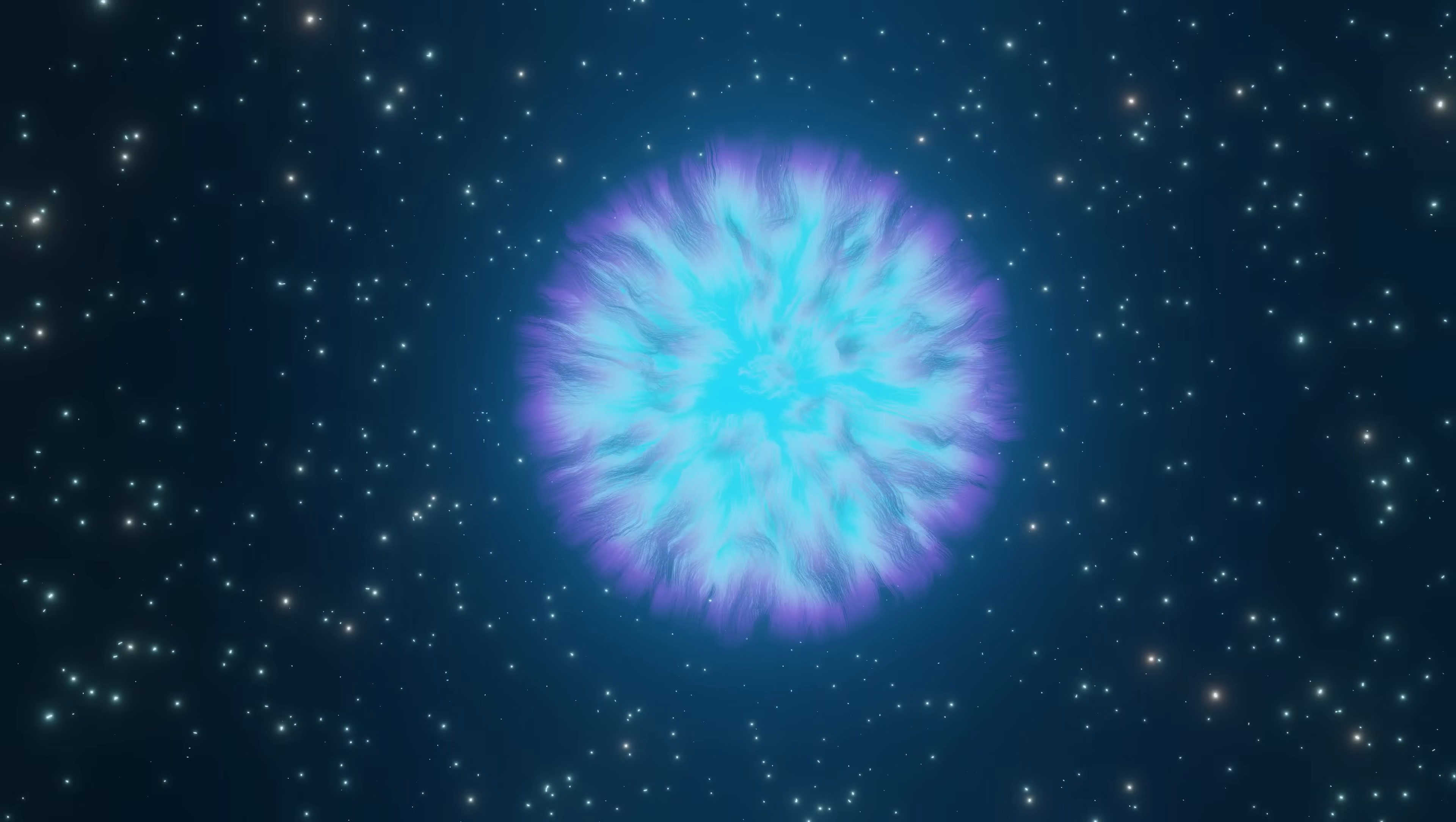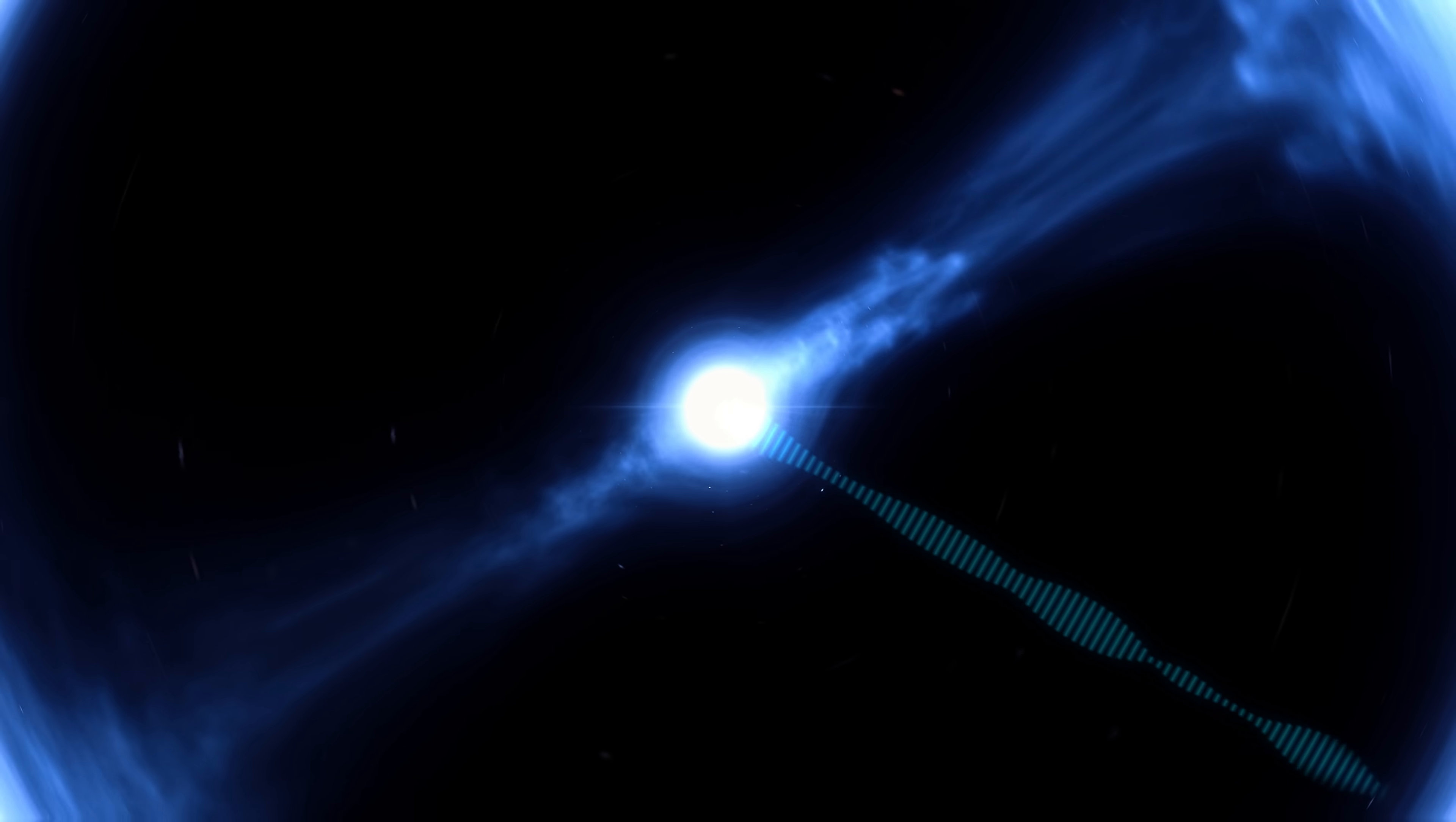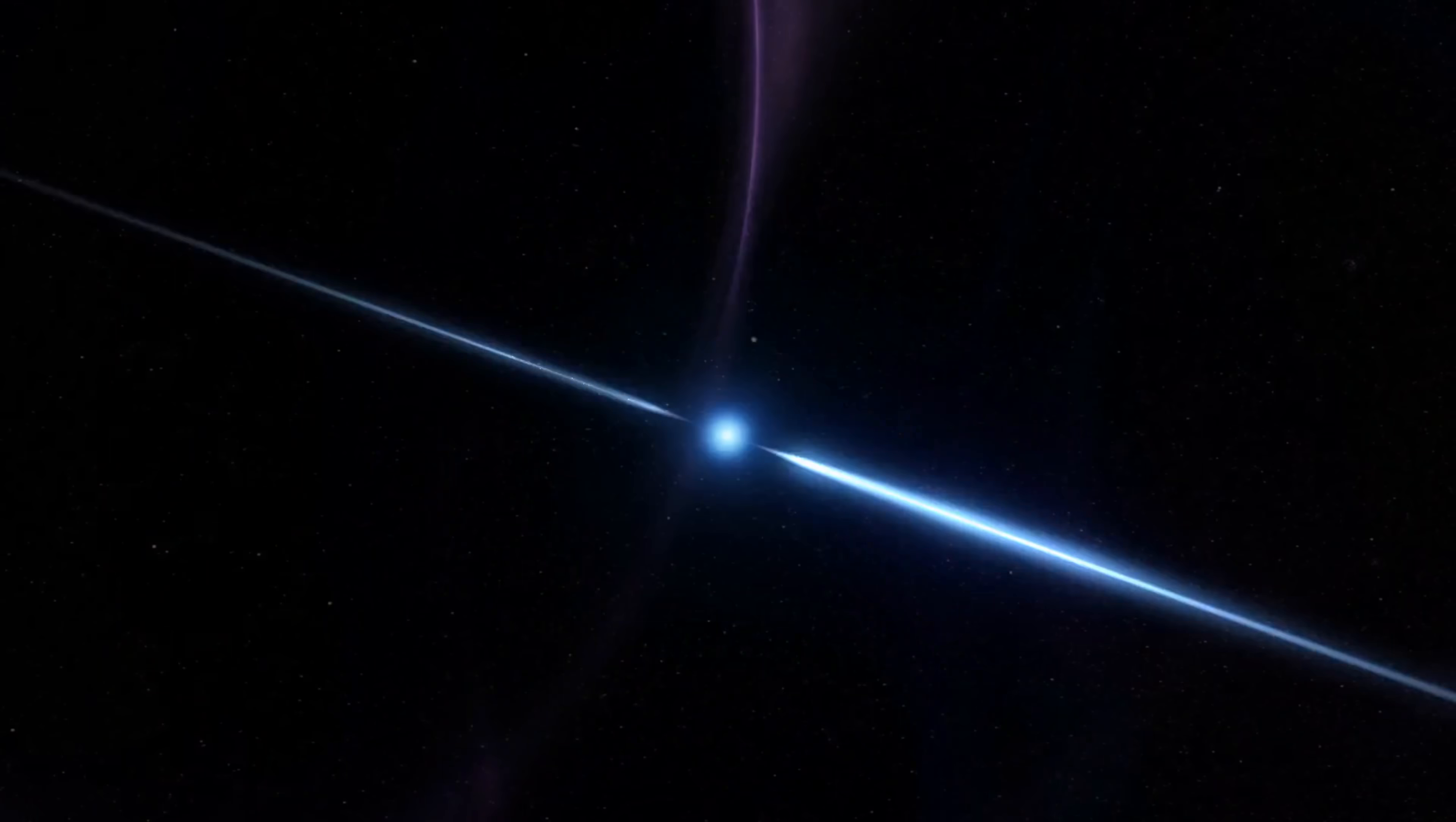When it comes to mysterious radio signals from space, suspicion often falls on pulsars. These celestial beacons are known to emit beams of radio waves, making them prime candidates for any unexplained cosmic chatter. But what are pulsars? Pulsars are neutron stars, born from the remnants of massive stars that have become supernovae. They spin at incredible speeds.